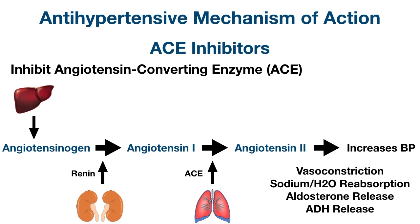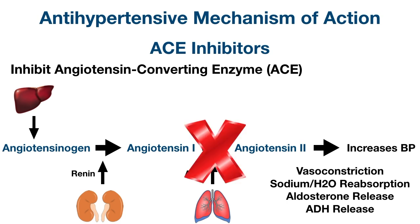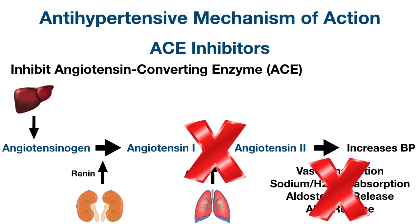If we block angiotensin converting enzyme, we decrease the formation of angiotensin 2. Without angiotensin 2, we won't have the downstream effects of raising blood pressure, which can control high blood pressure as a result.